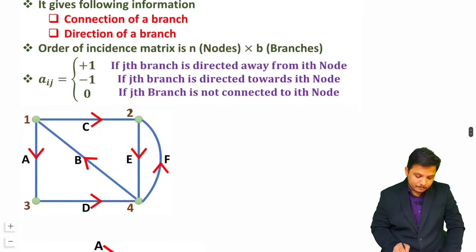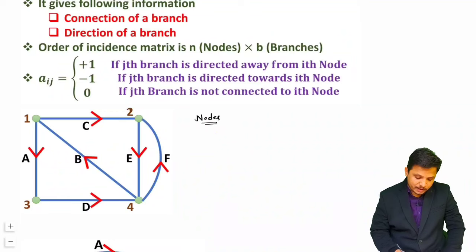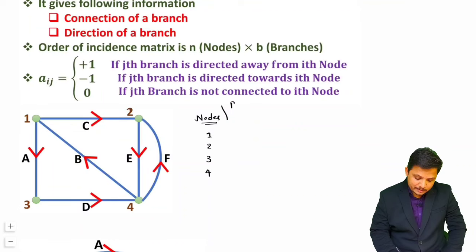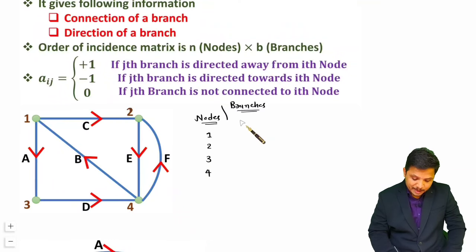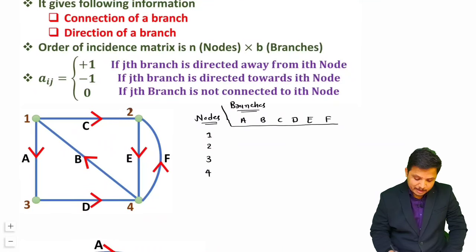Here we have one graph and for this graph let us make the incident matrix. When forming the incident matrix, first you write down the nodes in the graph. Here we have four nodes: 1, 2, 3, 4 — written vertically. Horizontally we write the branches. Here we have six branches: A, B, C, D, E, F.